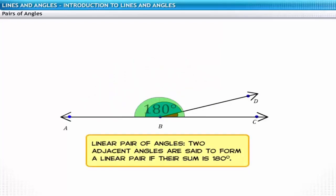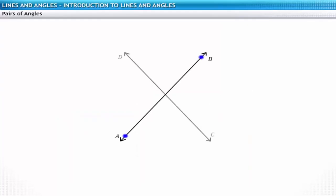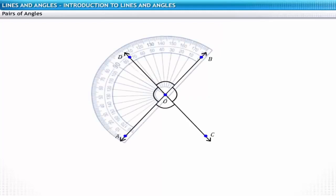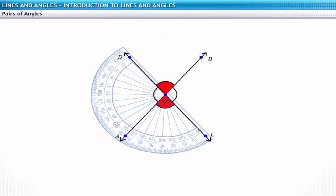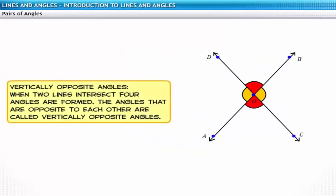Here the common arm is BD. And the non-common arms BA and BC form a straight line AC. Let lines AB and CD intersect at a point O. At the point of intersection, four angles are formed. On measuring the opposite angles, you will find that they are equal. Such angles are known as vertically opposite angles.